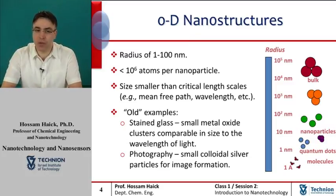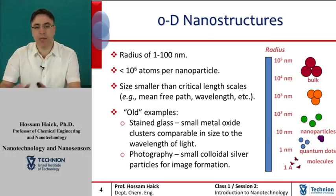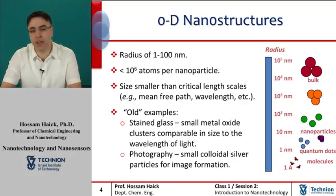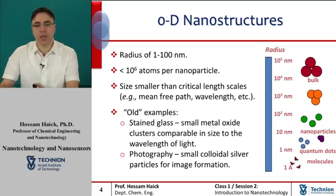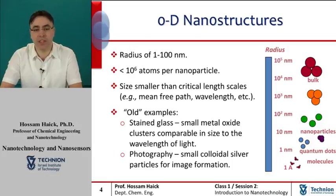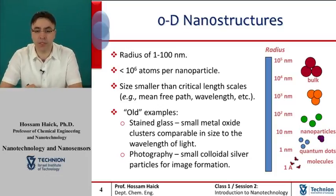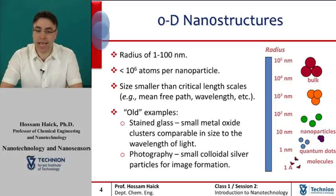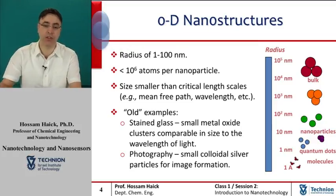Nanoparticles often possess unexpected optical properties, as they are small enough to confine their electrons and produce quantum effects. The size-dependent color of the nanoparticles was utilized, though without any intention, by artists as far back as the 9th century for generating a glittering effect on the surface of pots or colors in stained glass. Other size-dependent properties include quantum confinement in semiconductor particles, surface plasmon resonance in some metal nanoparticles, and chemical reactivity utilized for image formation in photography.